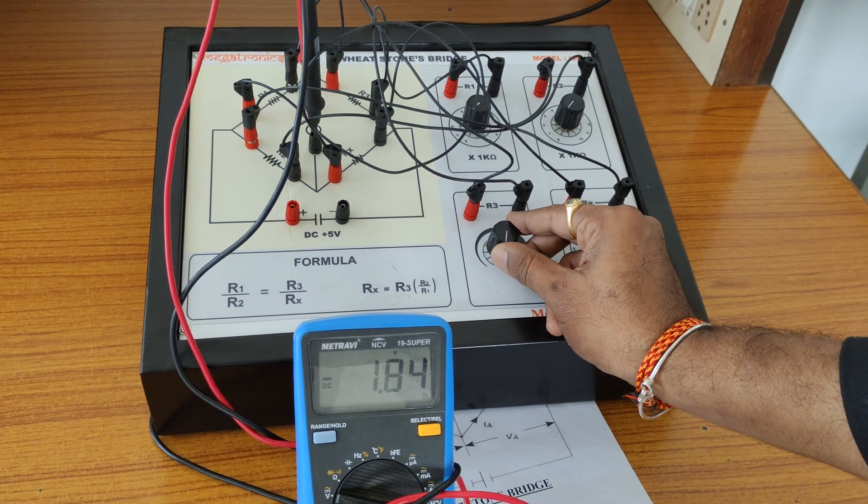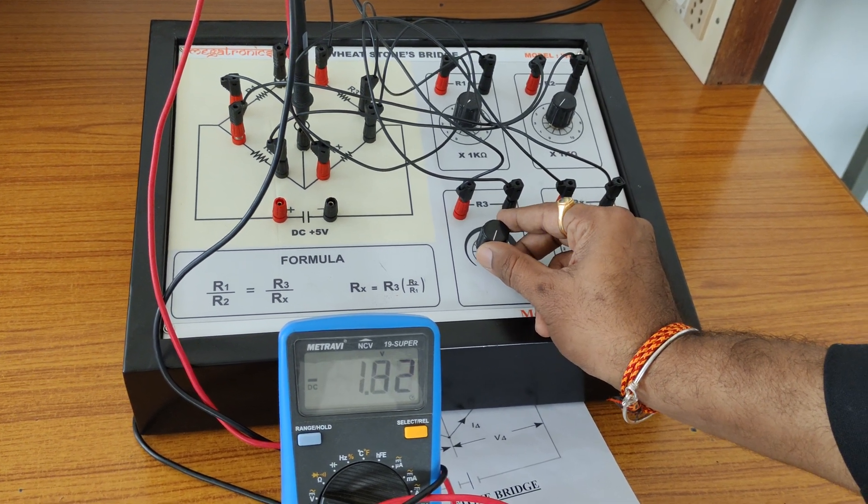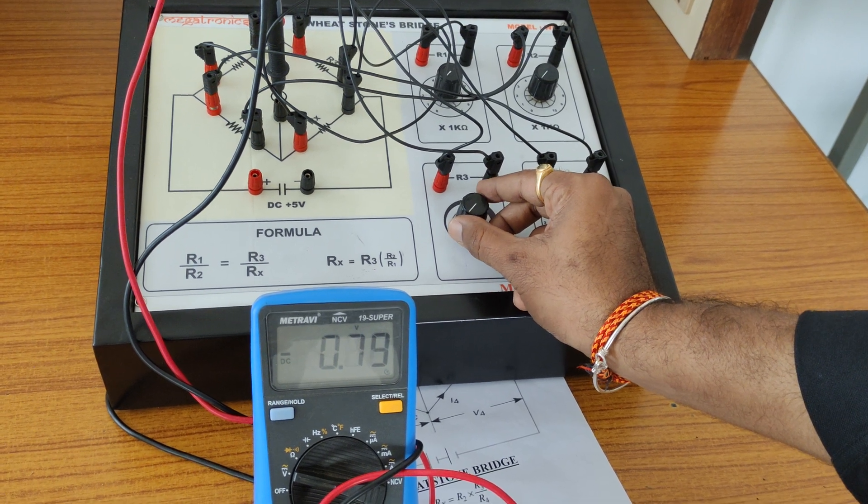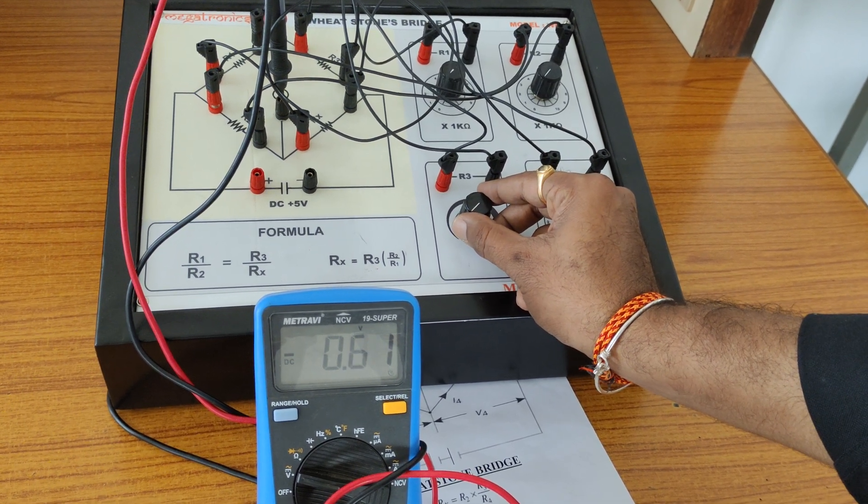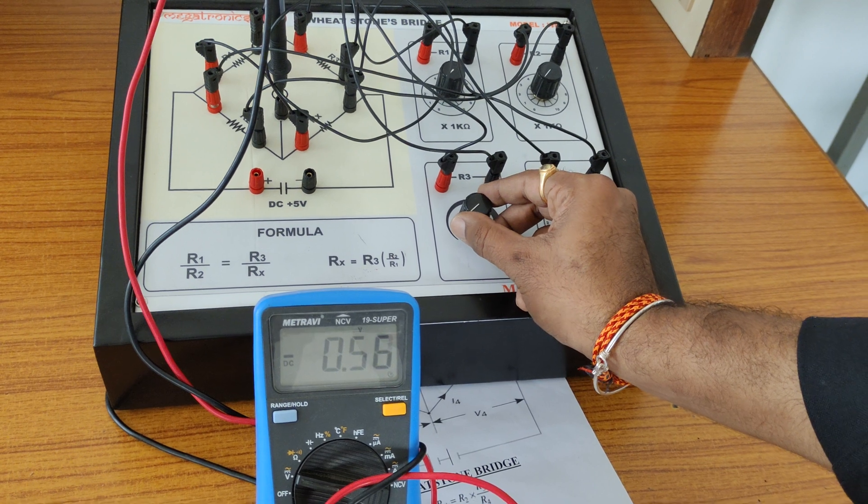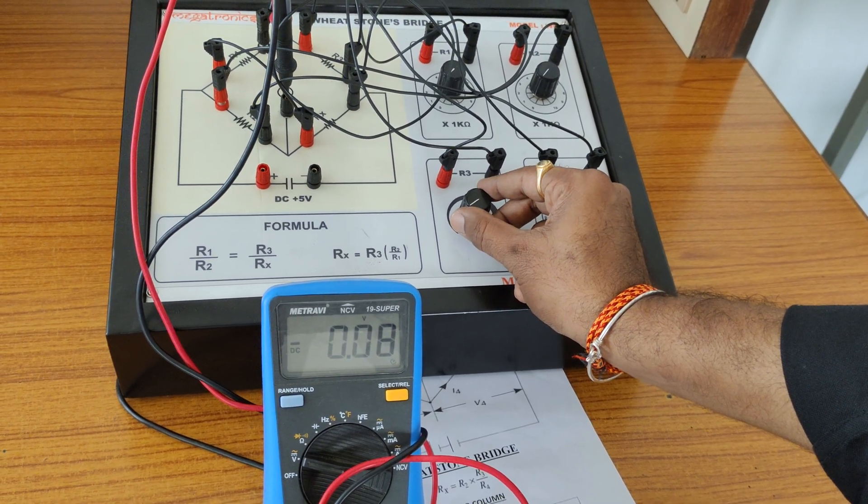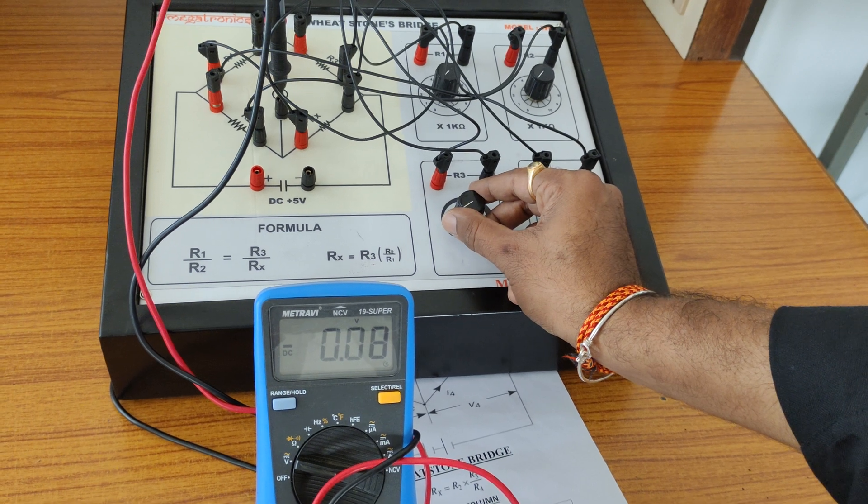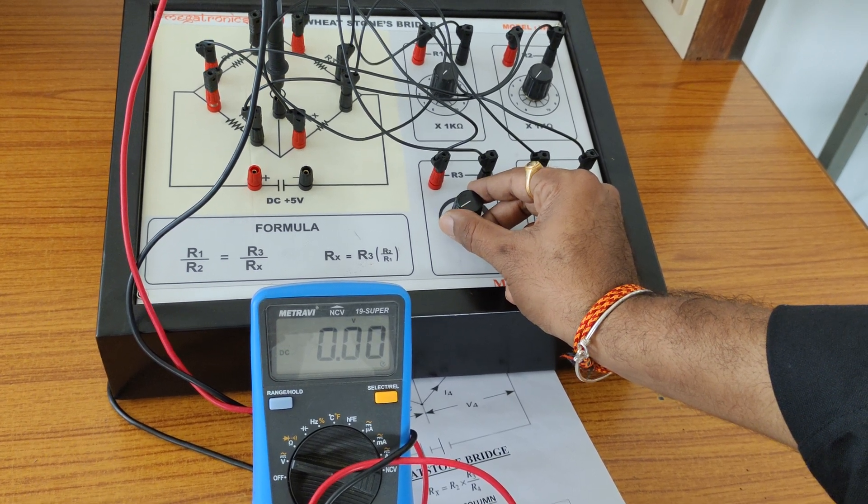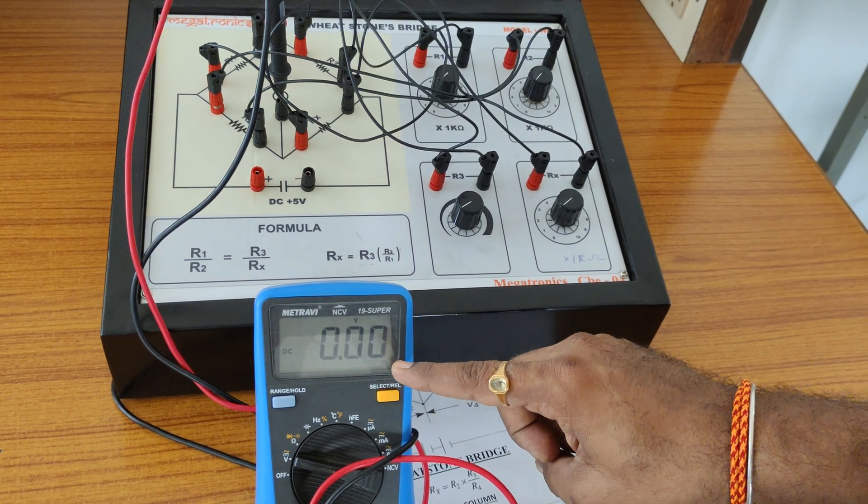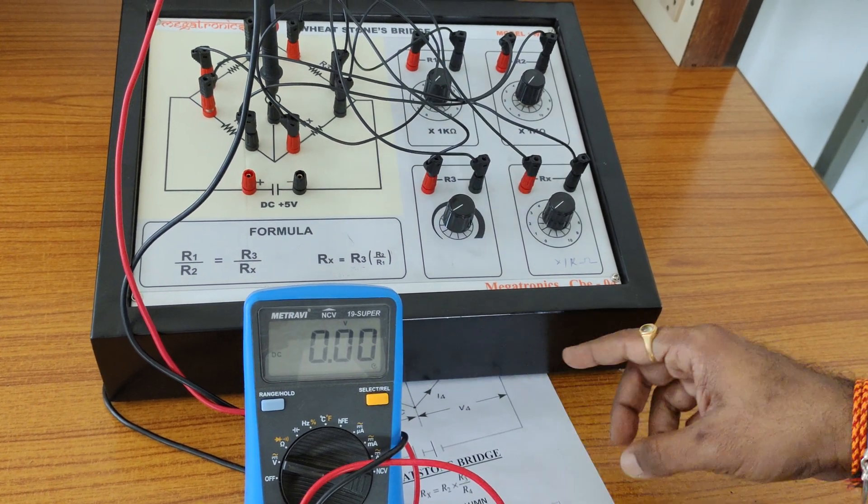I can change slowly this point here in order to balance our bridge. Hope you are seeing those values. It is varying like this. Slowly vary those things in order to make this bridge balance. Yeah, this is the condition. We observe the voltmeter reading here is 0.